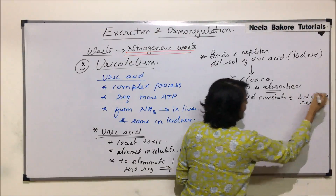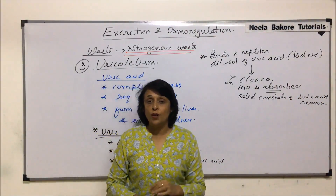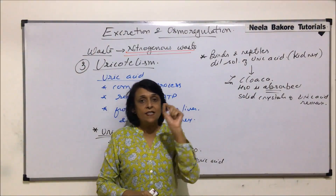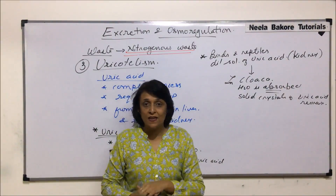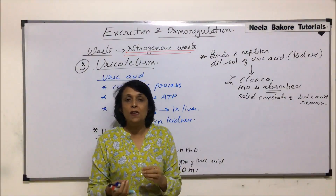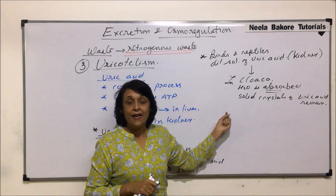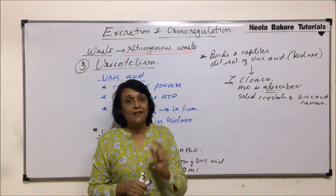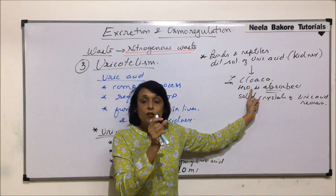That is why when we see the droppings of birds or the excretory material of lizards, we find something whitish along with the regular fecal matter. The fecal matter's color could be black, brown, or greenish, but there is something white alongside it. The colored part is the undigested food material, and the white part is solid uric acid.